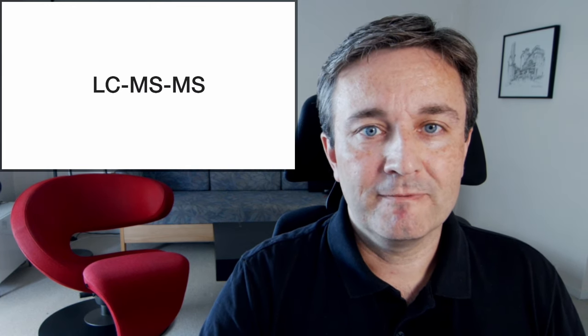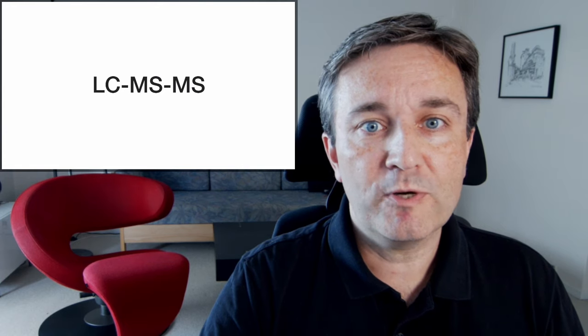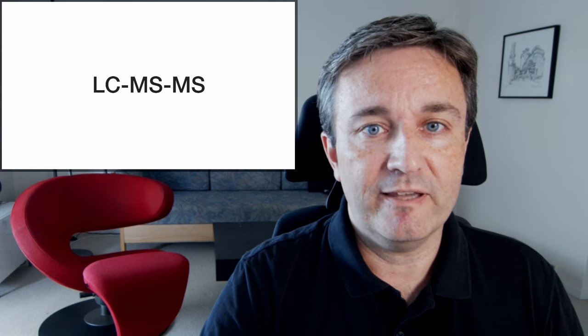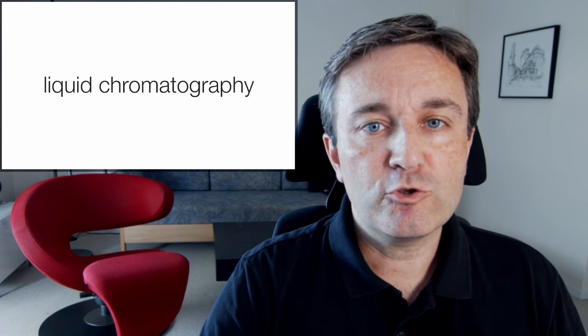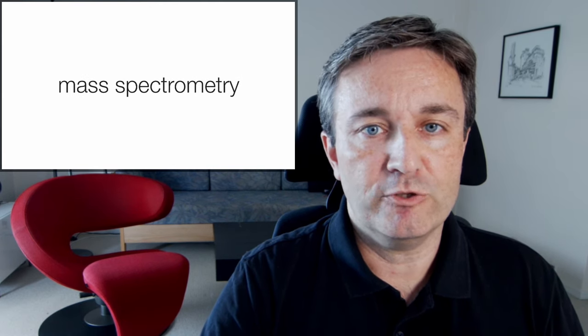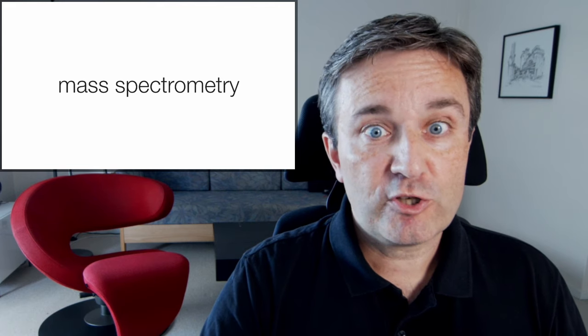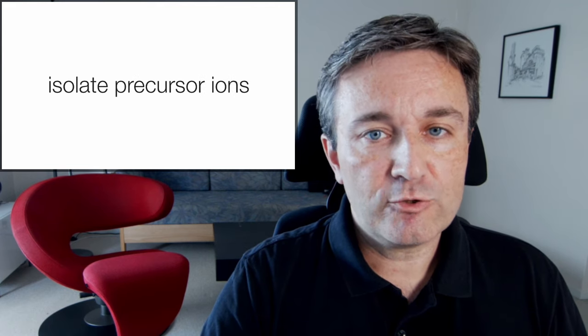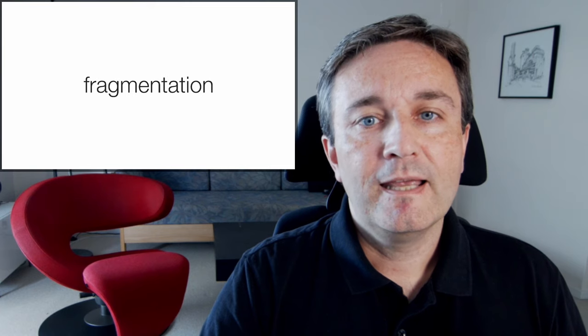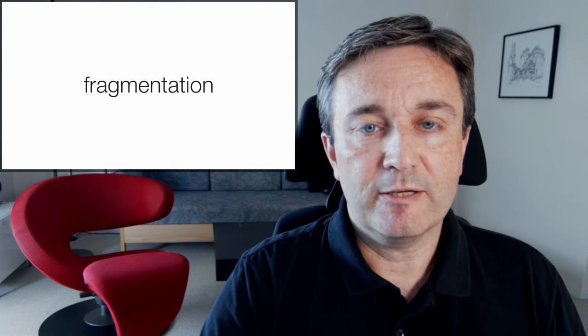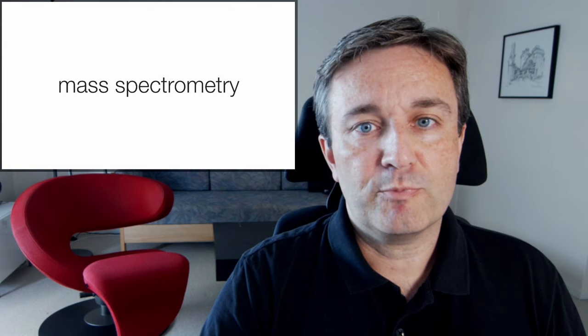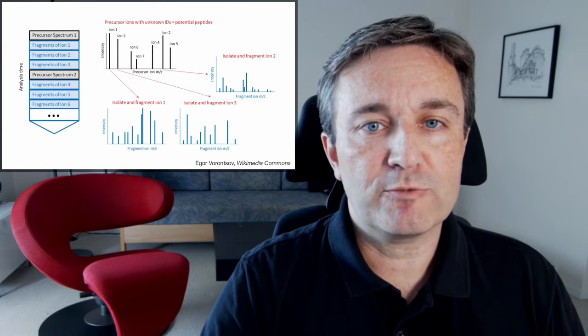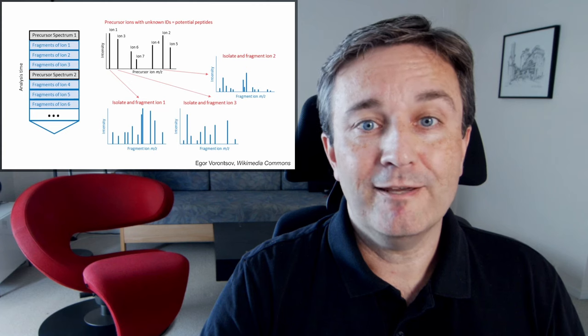This brings us to the next topic, LC-MS-MS. And here you get the first taste of how much people in mass spectrometry like their acronyms. LC means liquid chromatography, and it allows you to separate the peptides before even sending them into the mass spectrometer. The first mass background then isolates precursor ions. These are fragmented, typically by collision with an inert gas, and then sent into mass spectrometry again for a second round of mass spectrometry to identify more data.